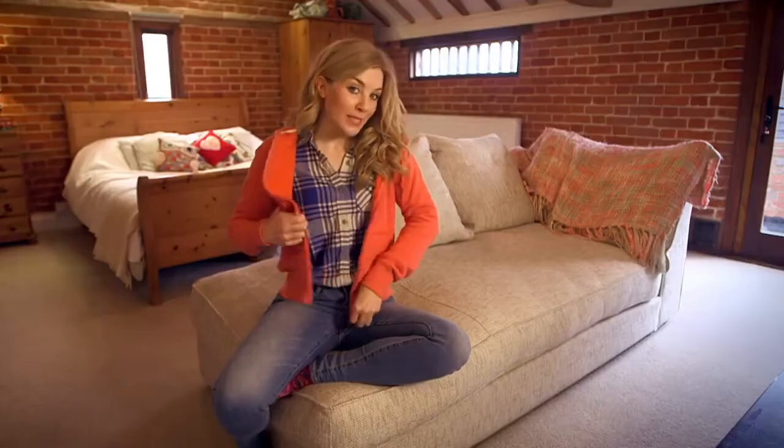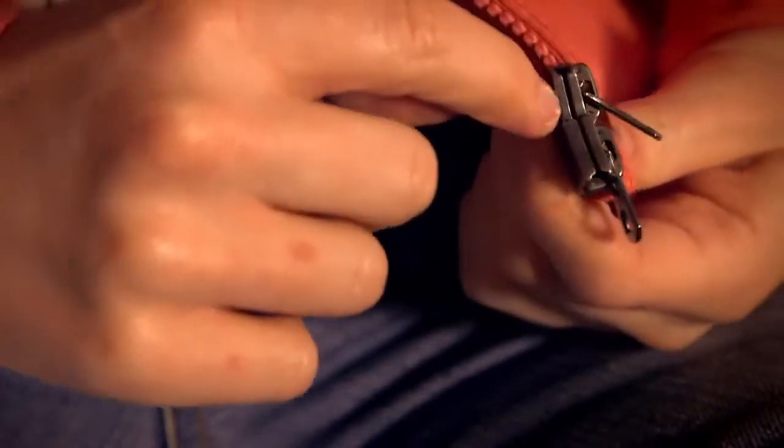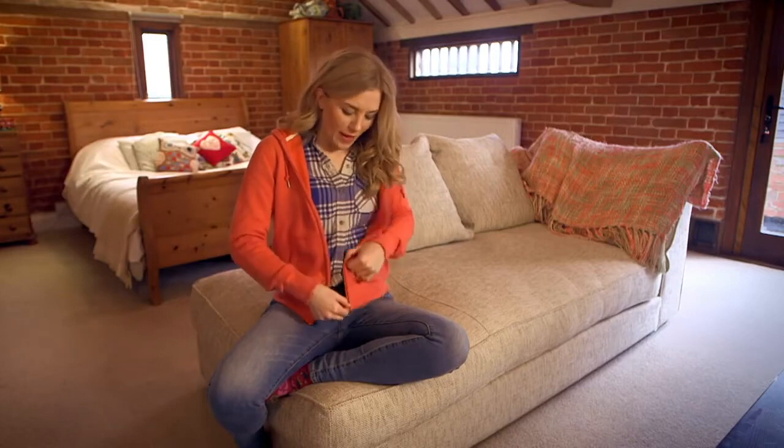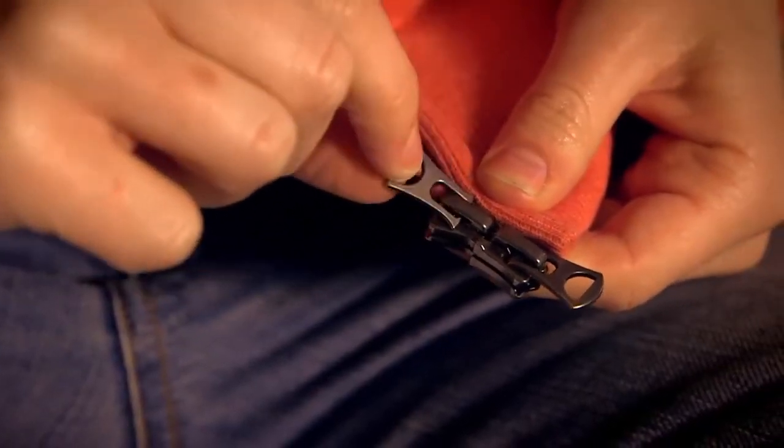Now if I undo my zip can you see at the bottom on this side there are two metal bits. These are called sliders and that's because they slide up and down and they have a pull tab on them so you've got something to hold on to.